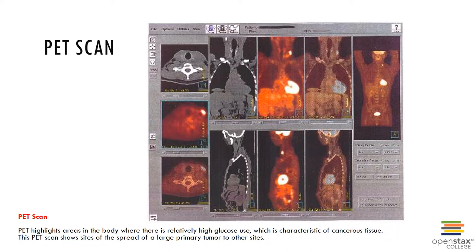A PET scan highlights different areas in the body and can be used as a diagnostic tool — for example, to look for areas with high glucose use. Glucose is the preferential food source for cancer, so this is generally characteristic of areas that might have cancerous tissue. In this case the PET scan shows the spread of different tumors to other parts of the body.